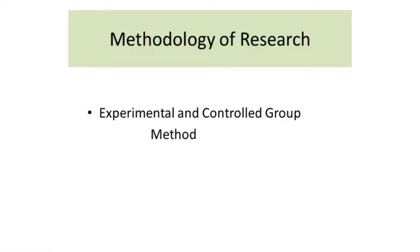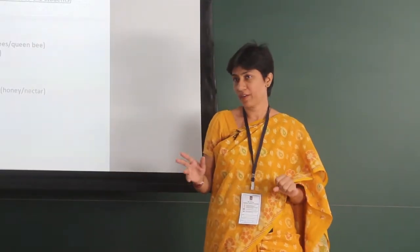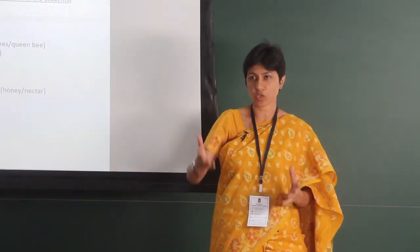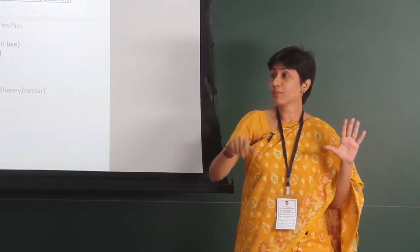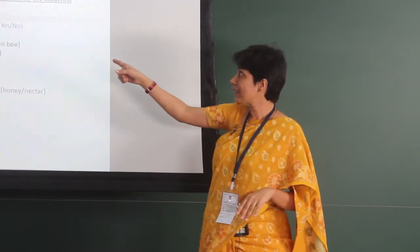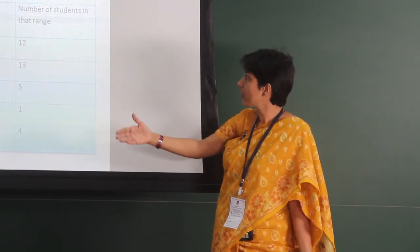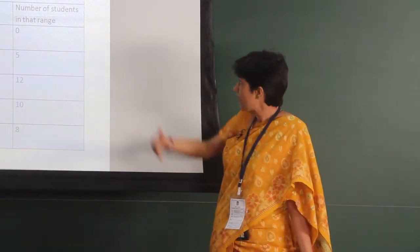To quantify and understand the impact of this teaching aid, the methodology of research adopted was the experimental and controlled group method. Two sections of class four were chosen, each with a class strength of 35. The model was used and two questionnaires were prepared. Questionnaire one was given to both sections to gauge their previous level of understanding. Questionnaire two was given to 4X after teaching them through the conventional chalk-and-talk method, and to 4Y after being taught with the help of this model.